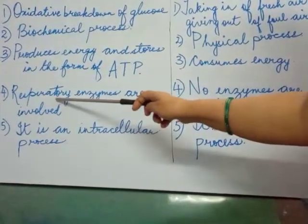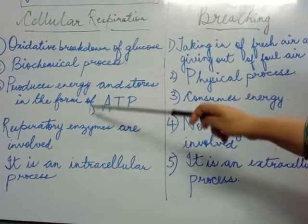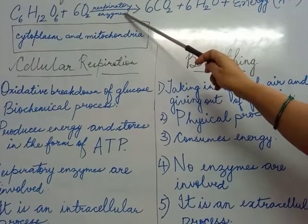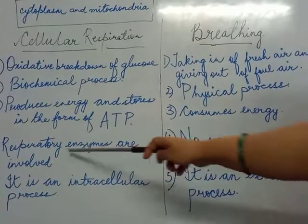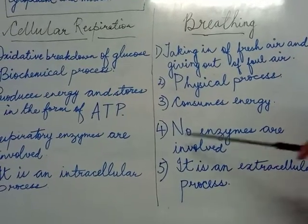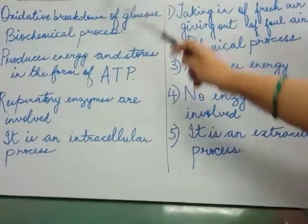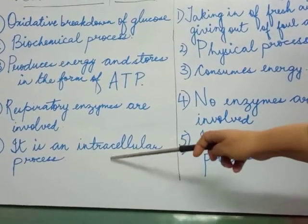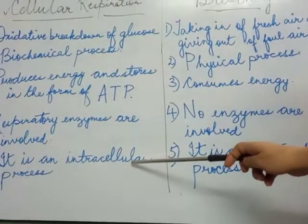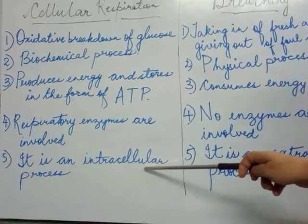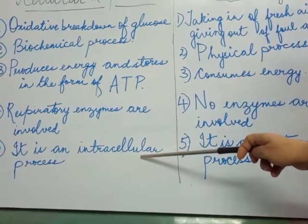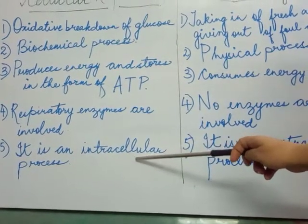Point number four: in cellular respiration, respiratory enzymes are involved. This process takes place in the presence of various enzymes, that is why it is said respiratory enzymes are involved. In breathing, no enzymes are involved. Point number five: cellular respiration is an intracellular process. This process takes place inside the cells of the living body — in each and every cell — that is why it is called an intracellular process.